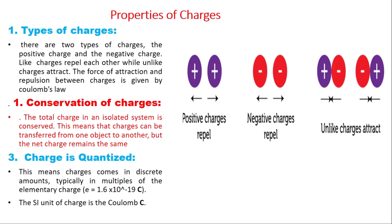The second property of charge is the conservation of charges. Charges are conserved in an isolated system — the total charge in an isolated system is conserved. This simply means that charges can be transferred from one object to another, but the overall net charge still remains the same.